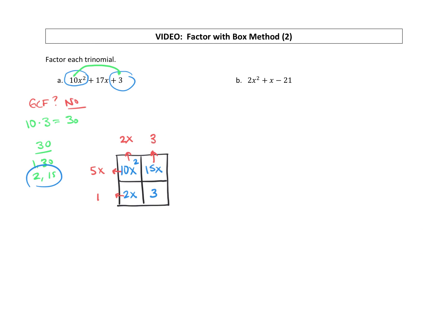Now that we have factored out the GCFs, it's just a matter of putting our answer together. I can see one binomial will be 2x plus 3, and the other binomial is 5x plus 1.